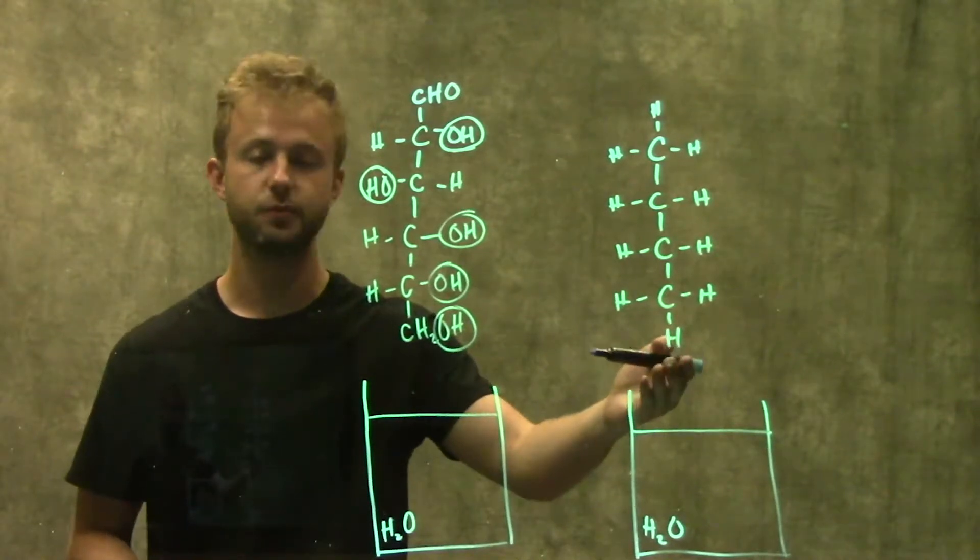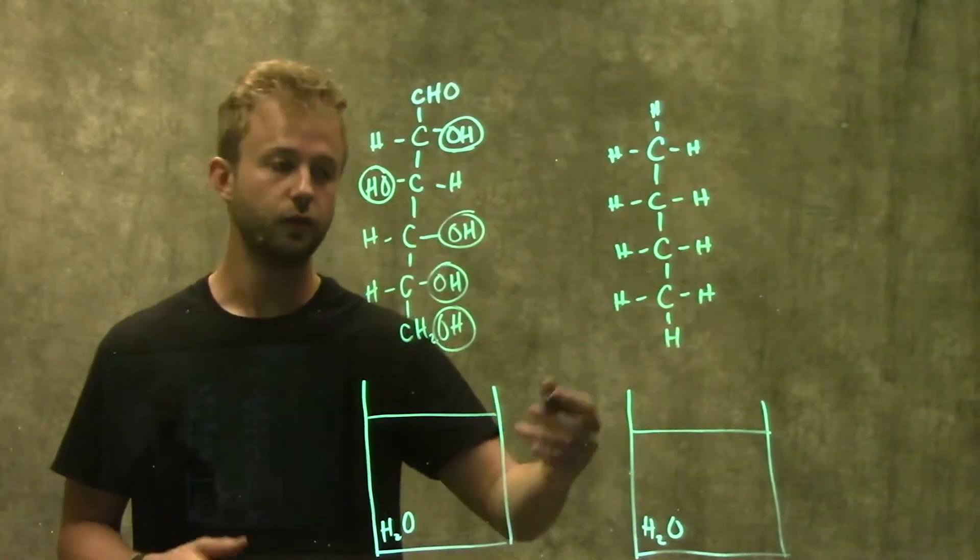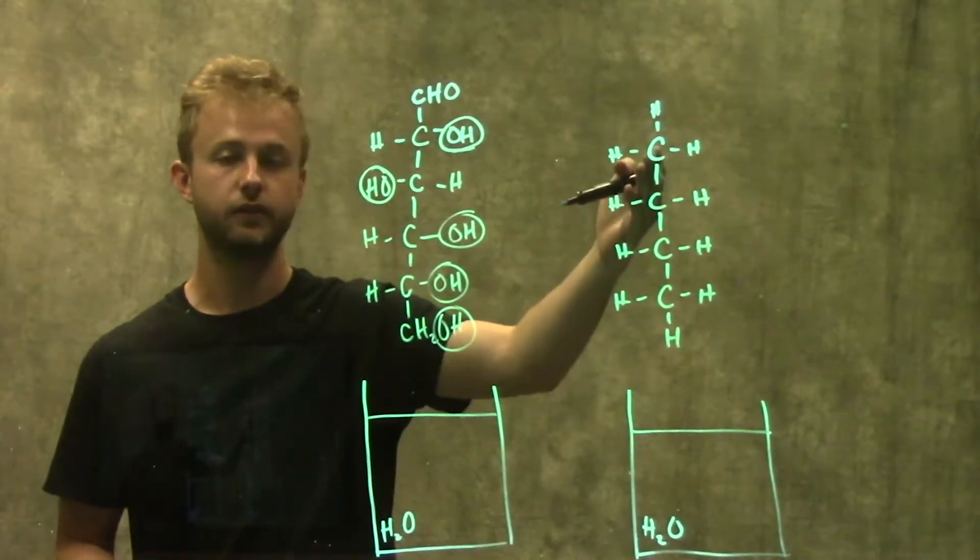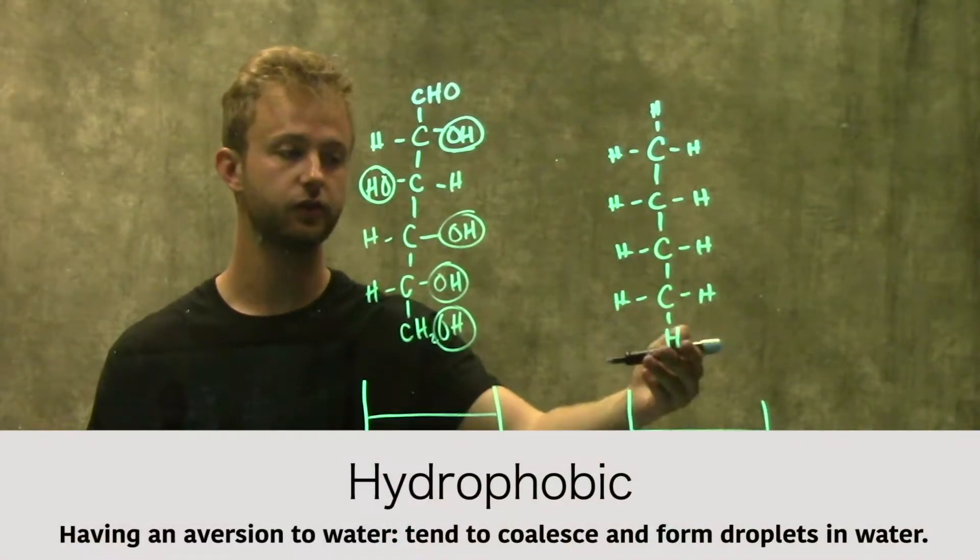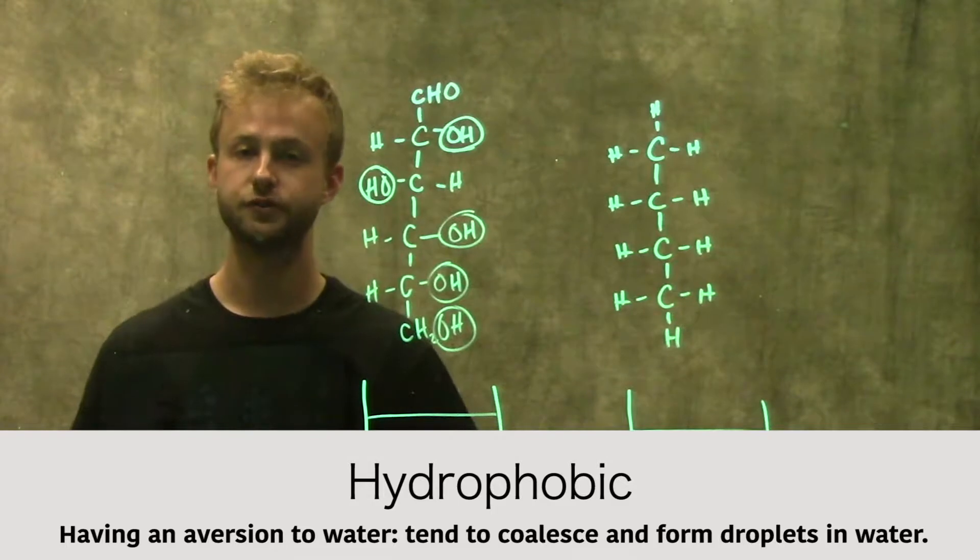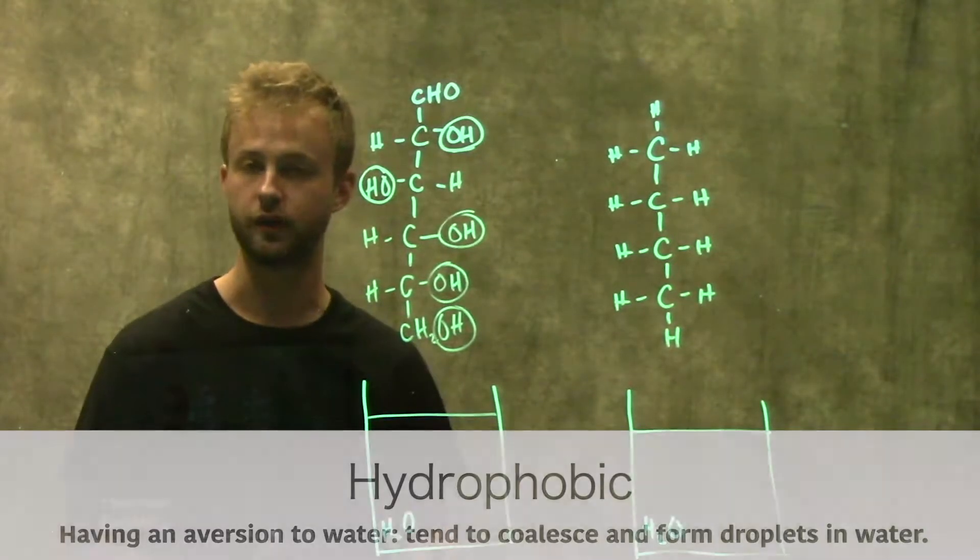So now when we have something like this molecule over here on the other hand we know that the carbon-hydrogen bond is a non-polar covalent bond. So this molecule is going to be non-polar or hydrophobic which means it doesn't like to be with the water.